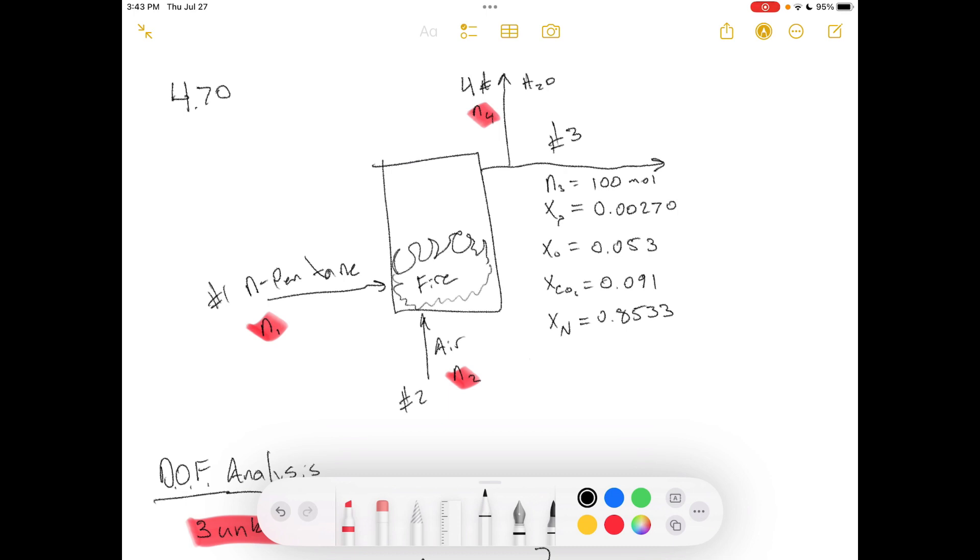The problem statement says, N-pentane is burned with excess air in a continuous combustion chamber. Part A, a technician runs an analysis and reports that the product gas contains 0.270 mole percent pentane, 5.3 percent oxygen, 9.1 percent carbon dioxide, and the balanced nitrogen on a dry basis. Assume 100 mole of dry product gas as a basis of calculation. Draw and label a flow chart, perform a degree of freedom analysis based on atomic species balances, and show that the system has negative one degrees of freedom. Interpret this result.